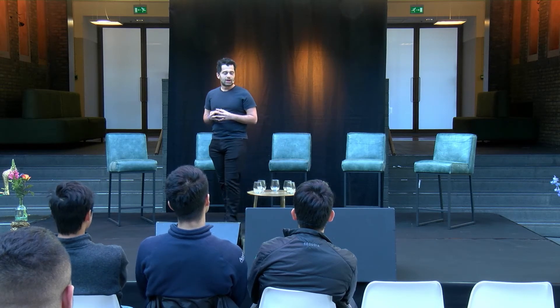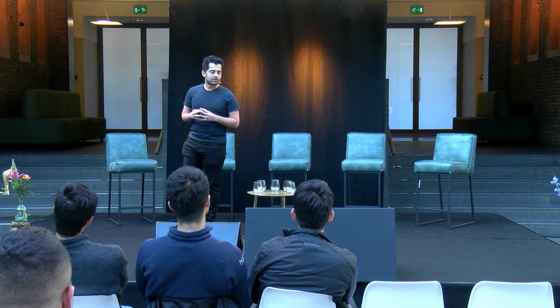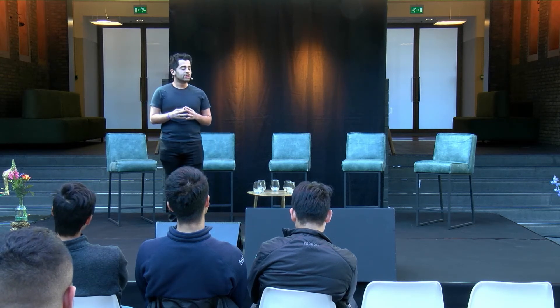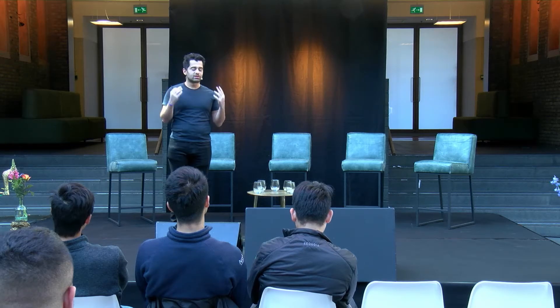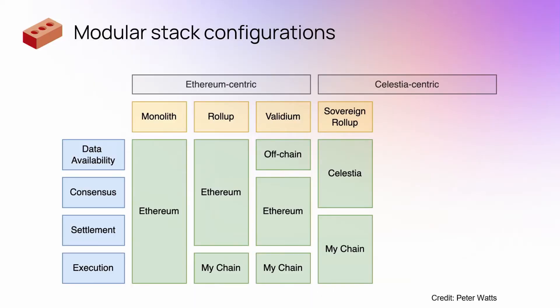So in Celestia, we're quite interested in this idea of sovereign roll-ups. In a sovereign roll-up, the sovereign roll-up uses the L1 only for data availability and consensus, but it does not have an enshrined settlement layer. Instead, it does its own settlement. And the reason why it's sovereign is because it can hard fork and it can upgrade without permission from a higher execution layer.